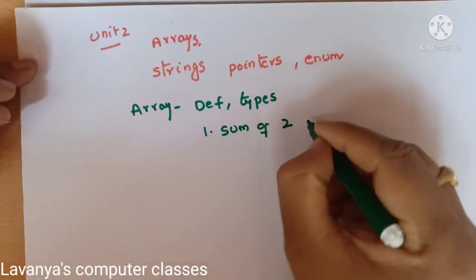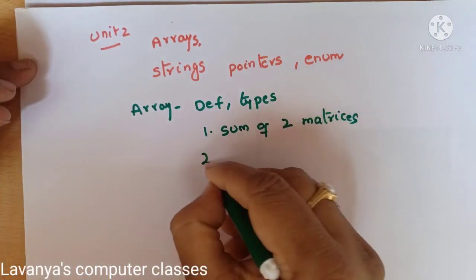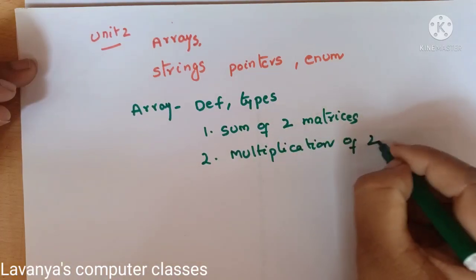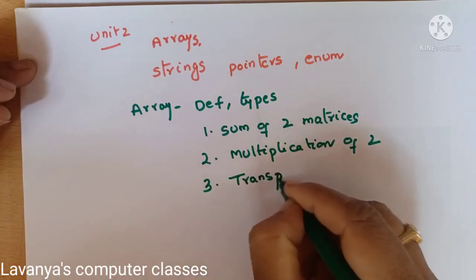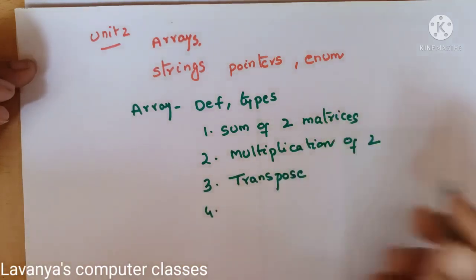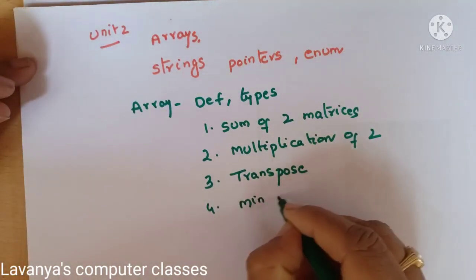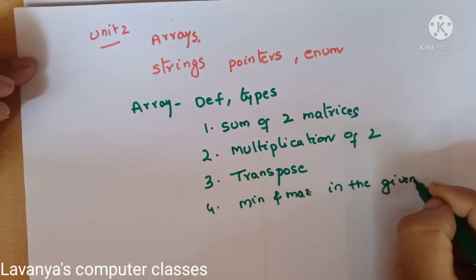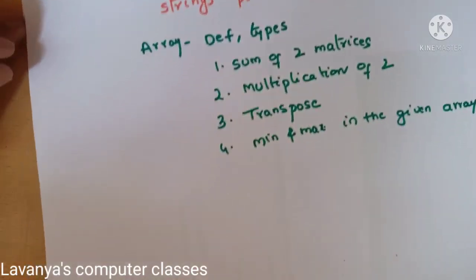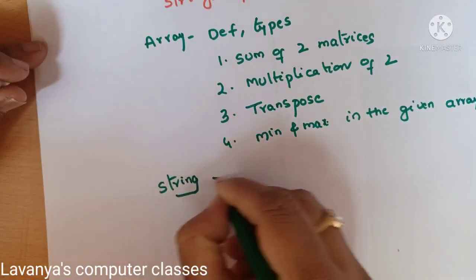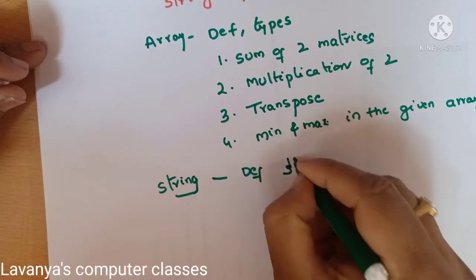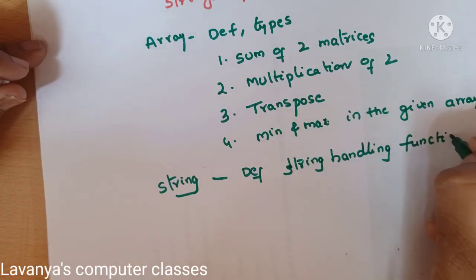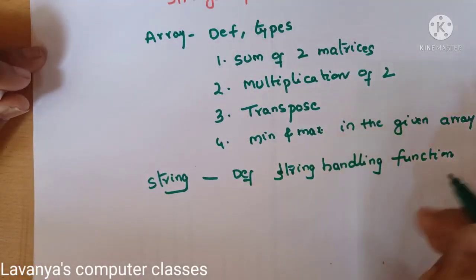The important programs in arrays are: sum of two matrices, multiplication of two matrices — compulsorily read this question — and transpose of a matrix. Also, finding the minimum and maximum element in a given array is an important question. Read everything with programs. In string handling, string handling functions are a very, very important question — everything with programs.